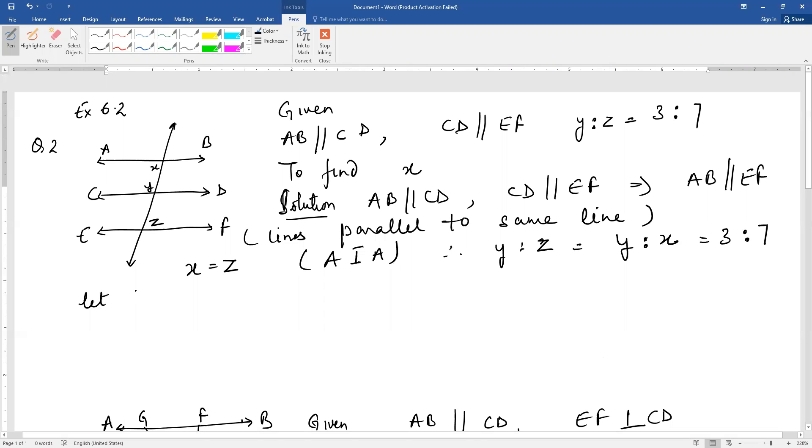Now let y equal 3a and x equal 7a. Now here AB is parallel to CD. Also AB is parallel to CD.